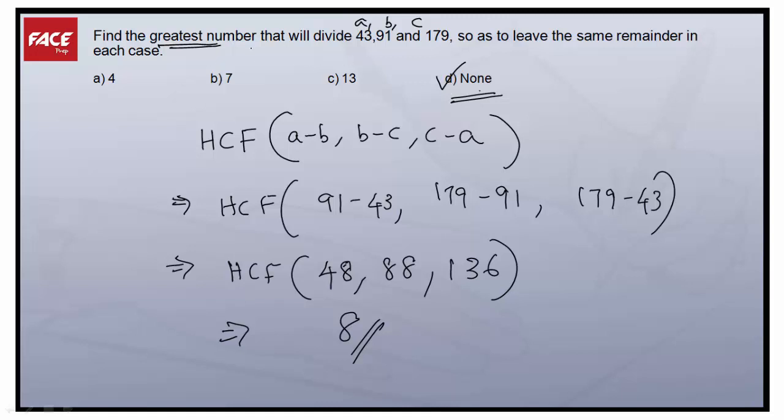Now, a very common mistake done by students: what they'll do is here greatest number that will divide 43, 91, and 179, so they'll check from the options. Option A, 4, satisfies all this, so they'll think 4 is the greatest number, but actually not.